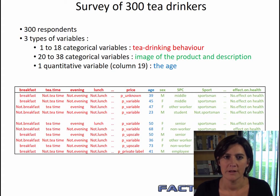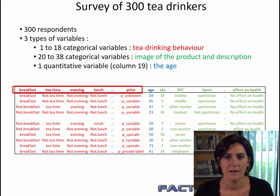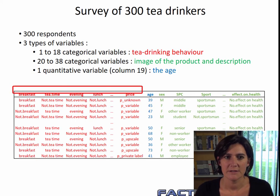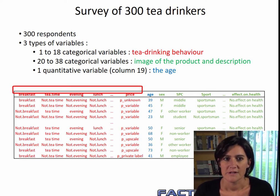The questionnaire was answered by 300 people and there were 3 types of variables in it. 18 variables dealt with how tea is consumed. For instance, do you take tea with breakfast? Yes or no. At afternoon tea time? Yes or no. In what form? In a tea bag? As loose tea? That's the first 18 variables.